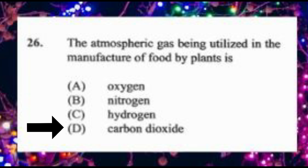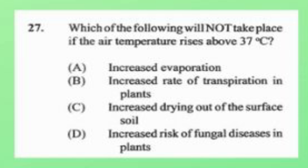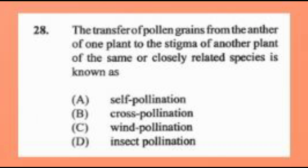Question number twenty-six: the atmospheric gas utilized in the manufacture of food by plants is A) oxygen, B) nitrogen, C) hydrogen, D) carbon dioxide. The answer is D, carbon dioxide. Question number twenty-seven: which will not take place if air temperature rises above 30°C? A) increased evaporation, B) increased transpiration, C) increased drying of surface soil, D) increased risk of fungal diseases. The answer is D.